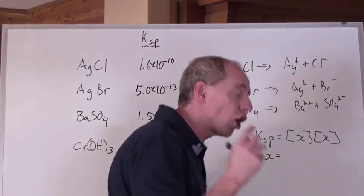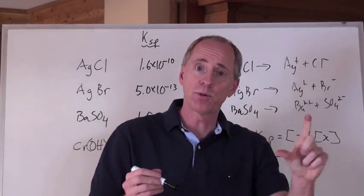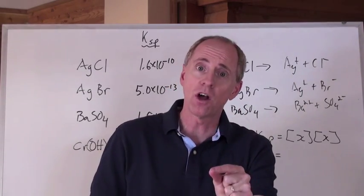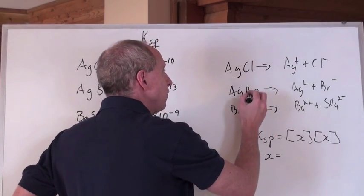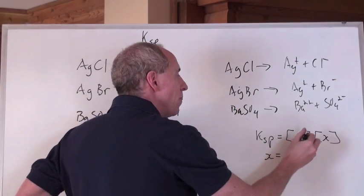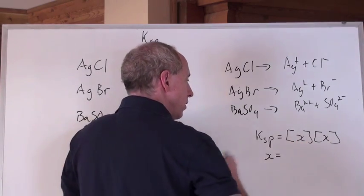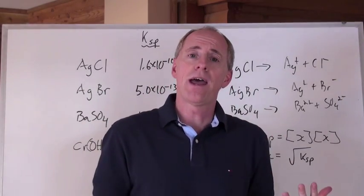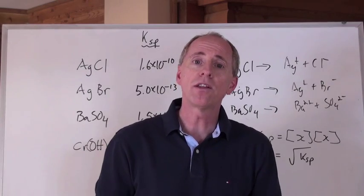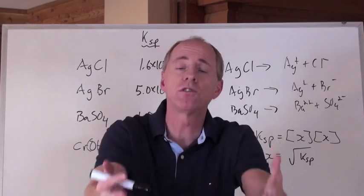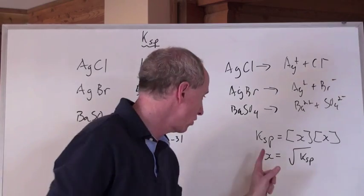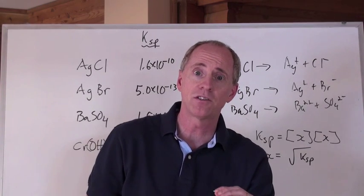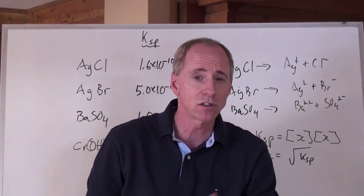If you write the KSP expression for every one of these chemicals as KSP equals the concentration of something times the concentration of something, each of these is going to give X squared equals the KSP. So X — which is the molar solubility, the concentration at the point of precipitation — equals the square root of the KSP. The one that has the highest concentration is the most soluble, and the one with the lowest value of X has the lowest concentration before hitting saturation, making it the least soluble.